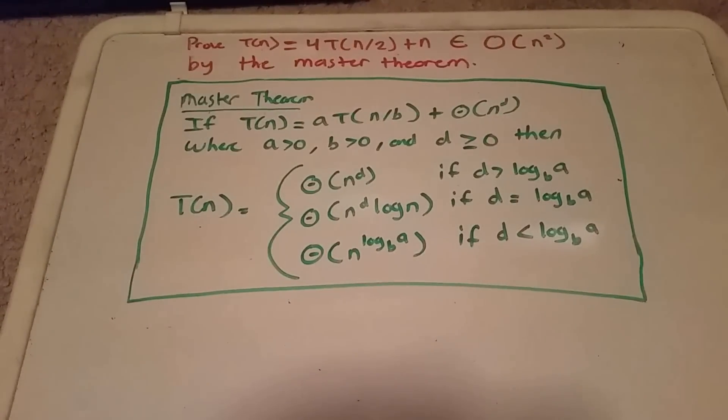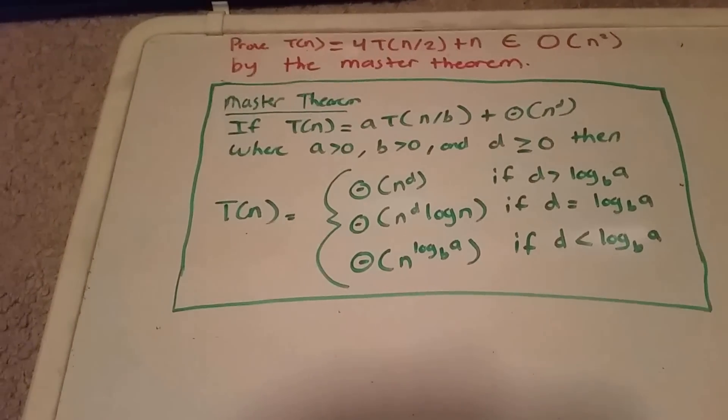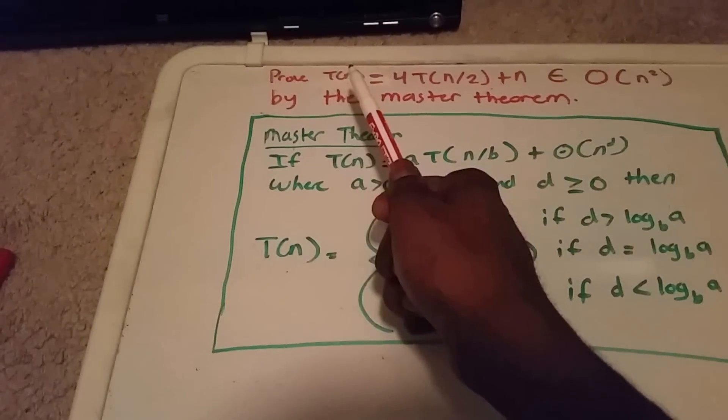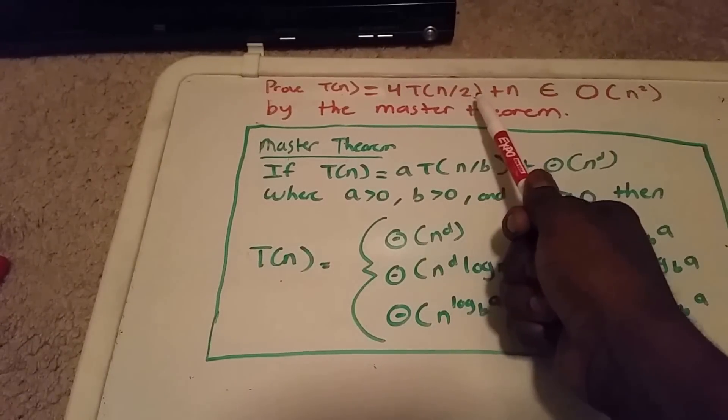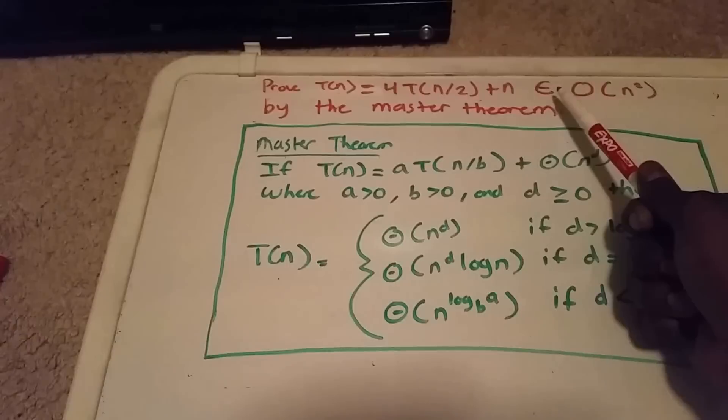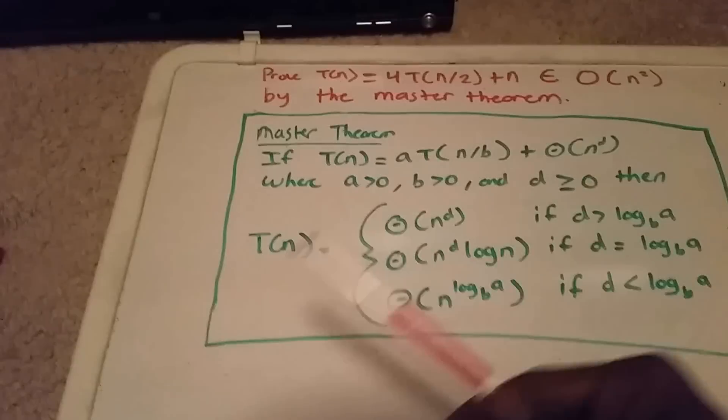Hey YouTube, this is a recurrence proof by master theorem. Here we want to prove that the recurrence T(n) = 4T(n/2) + n belongs to big O of n squared by the master theorem.